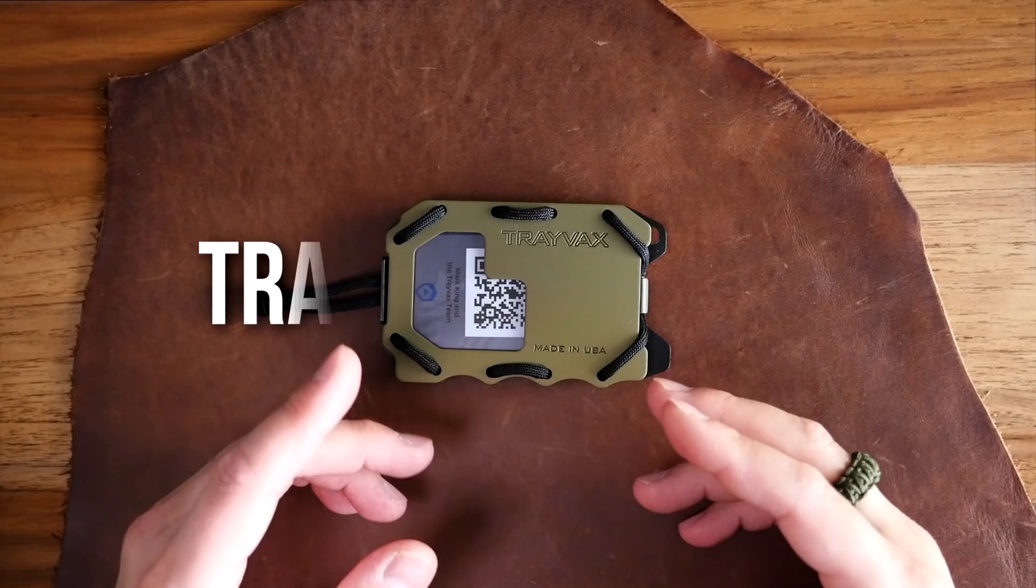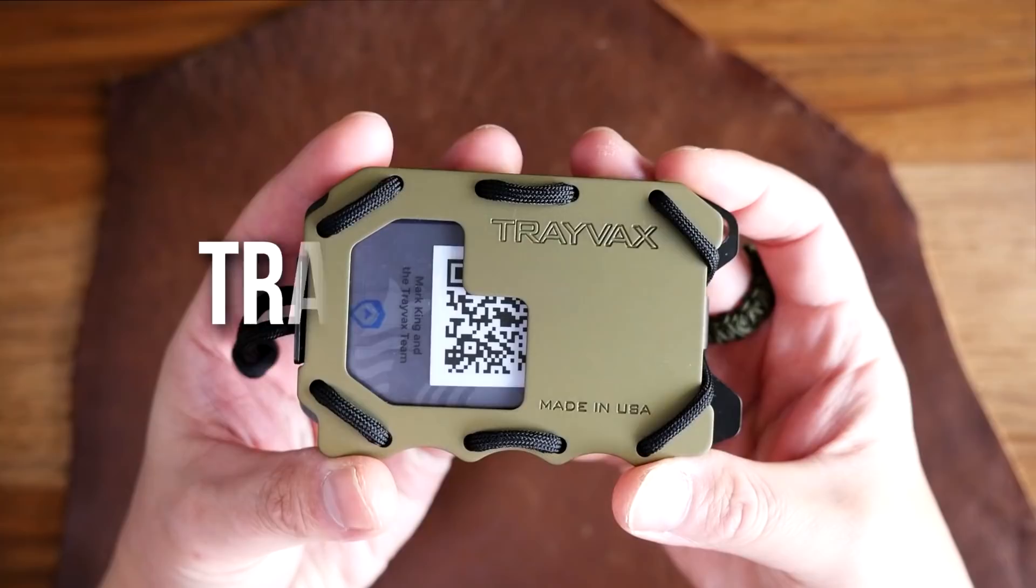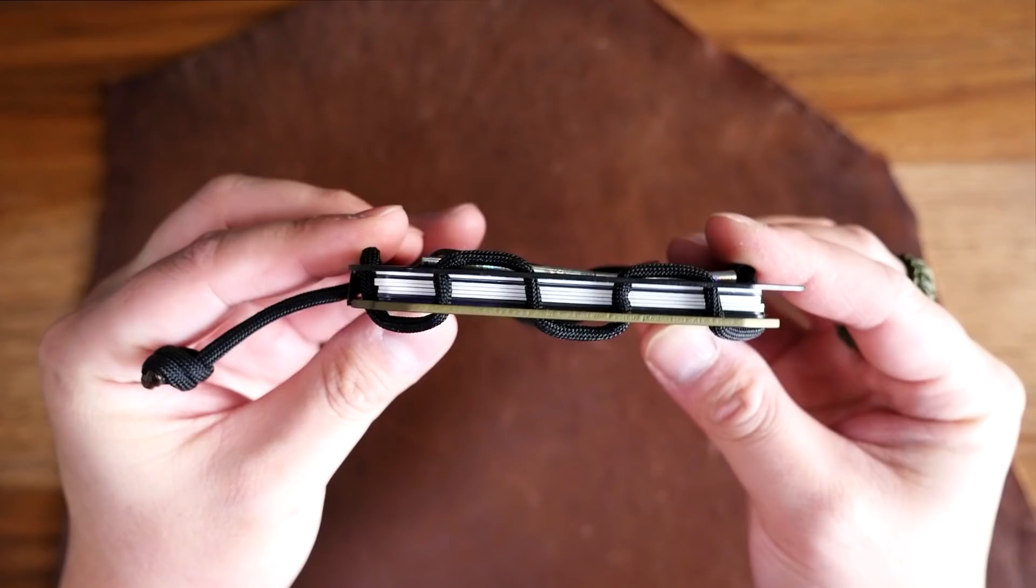Hey what's going on weavers, Tim here again and in today's video we're having a look at the Travax Original 2.0 wallet. This is a minimalist plate wallet that uses paracord to hold itself together and the paracord is replaceable that means it is highly customizable.